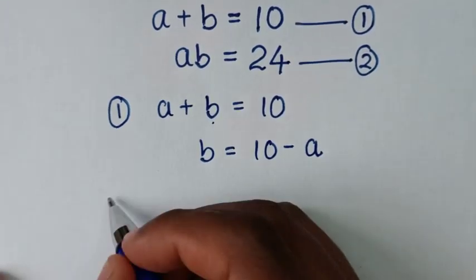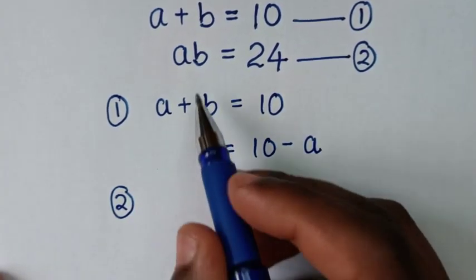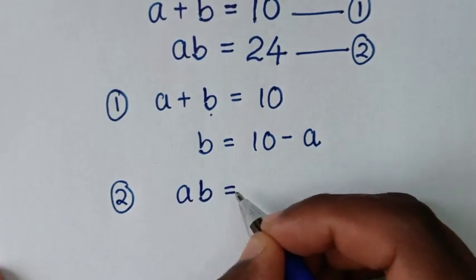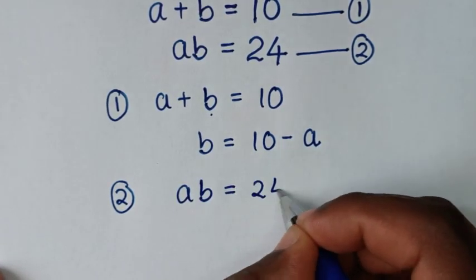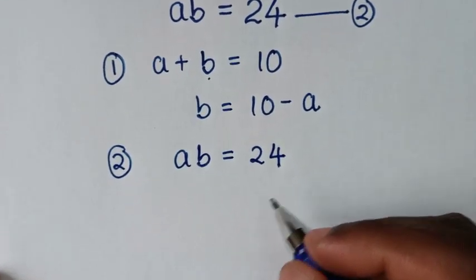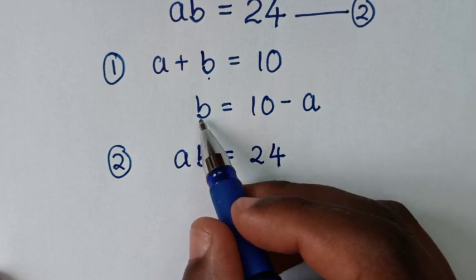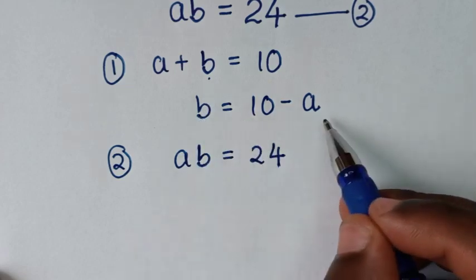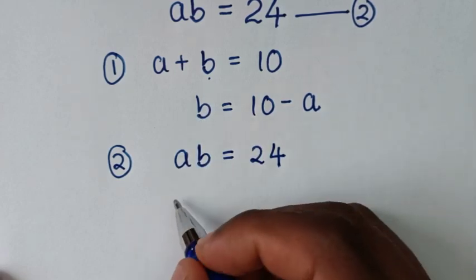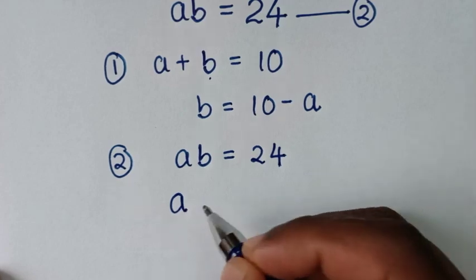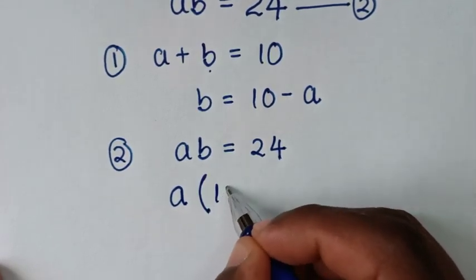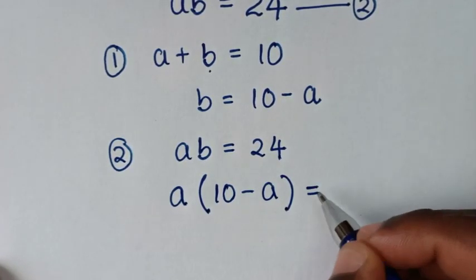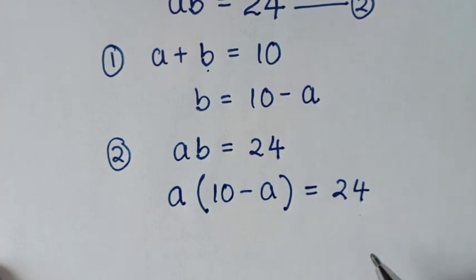In the next step, from equation 2, which is ab is equal to 24, we'll substitute the value of b, which is 10 minus a. So it will be a times bracket 10 minus a, bracket is equal to 24.